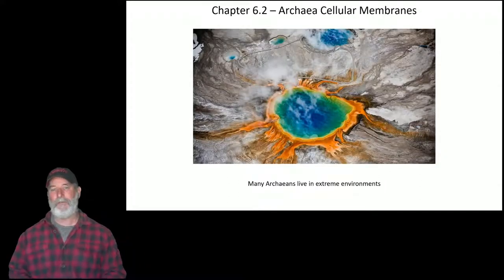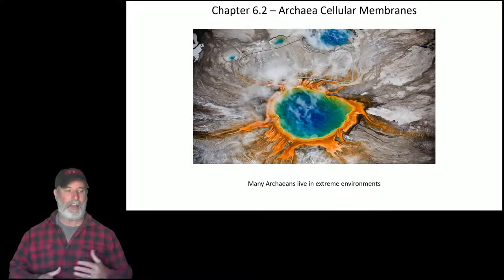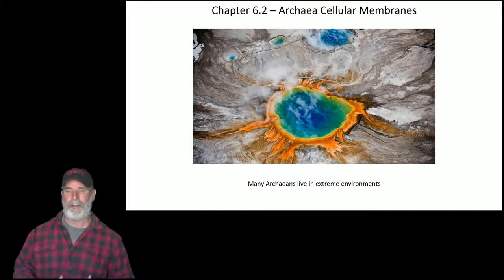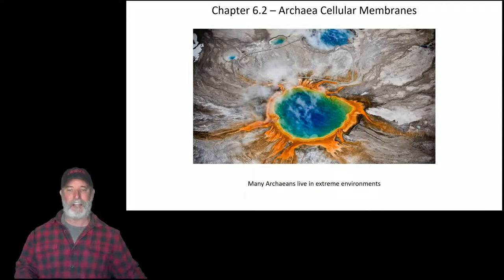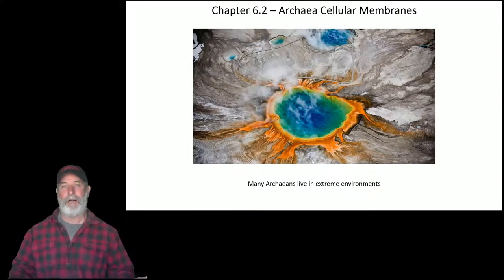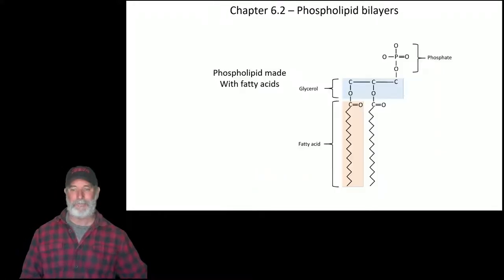Archaeans live in extreme environments. This picture from Yellowstone shows hot springs where you can see orange thermophilic bacteria growing around the edge of the boiling water, and as the water cools, cyanobacteria appear — so it transitions from orange to green.